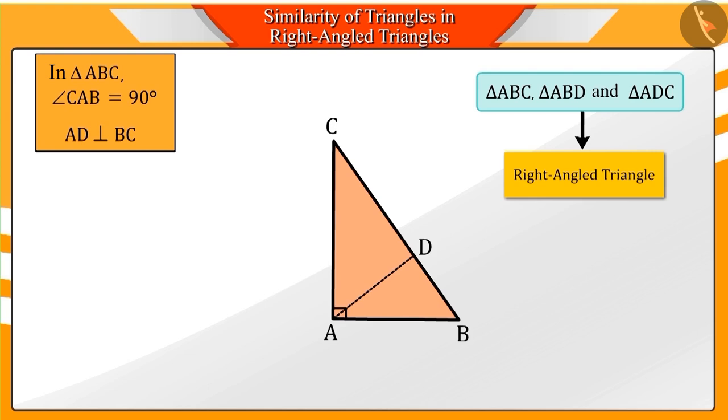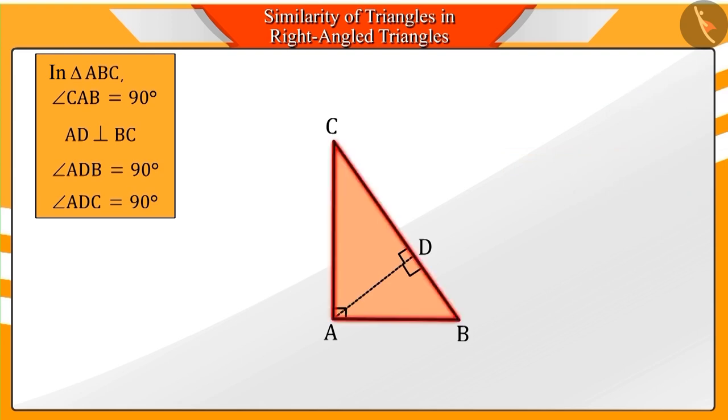Can you tell why? Because AD is perpendicular to the side BC and we know that perpendiculars intersect each other at 90 degrees, which is why triangle ABD and triangle ADC are also right-angled. What else do you see in these triangles?